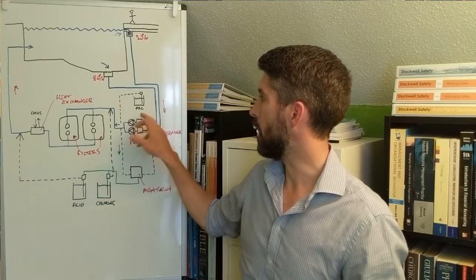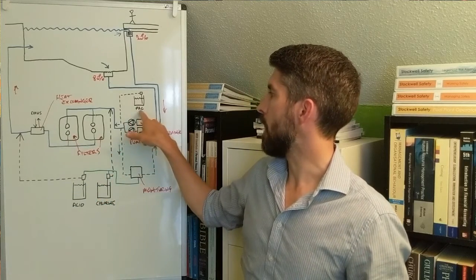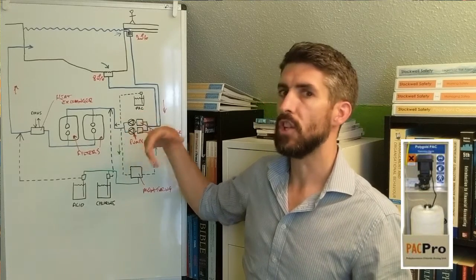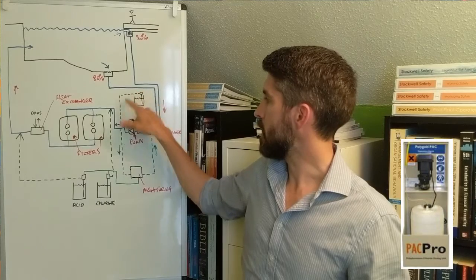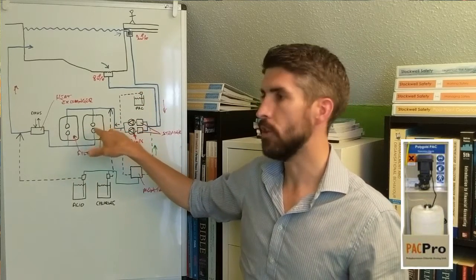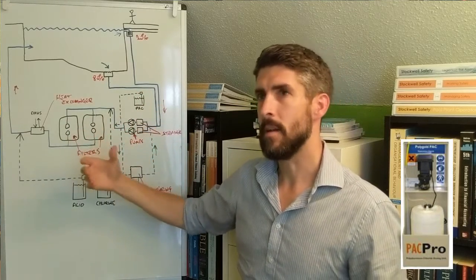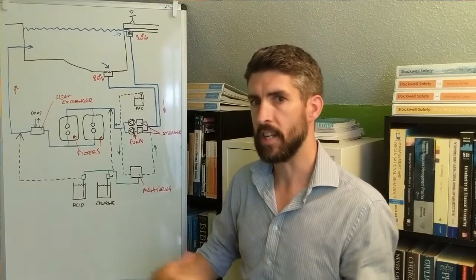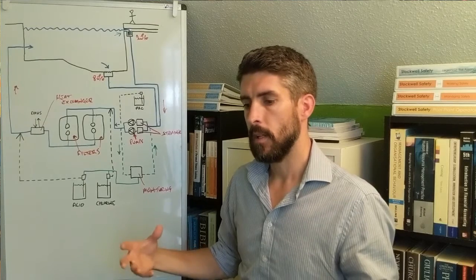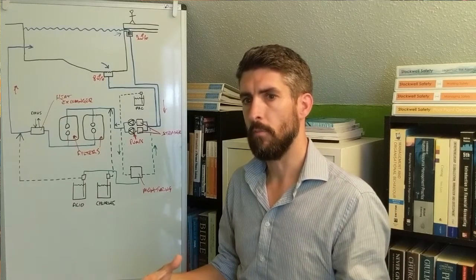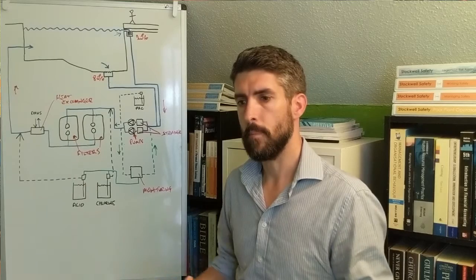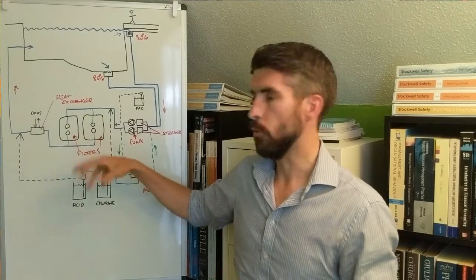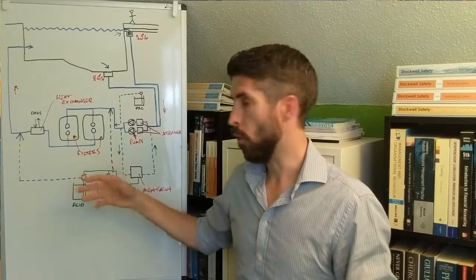Having knowledge of where your chemicals are being dosed is extremely important. What I've also got here is PAC, poly aluminum chloride, which is a coagulant that is being dosed in prior to the filters. It basically helps the filters by flocculating or coagulating very small particles of pollution into larger flocs, so that the filters are able to retain more pollution that way.